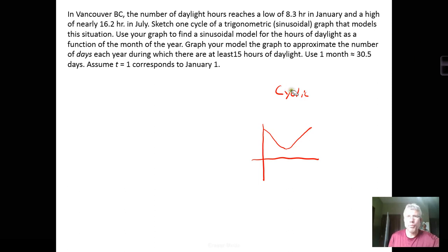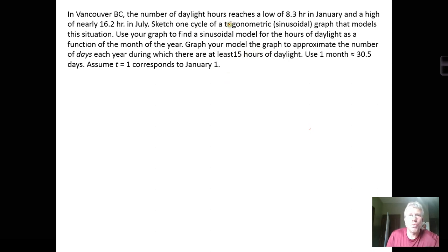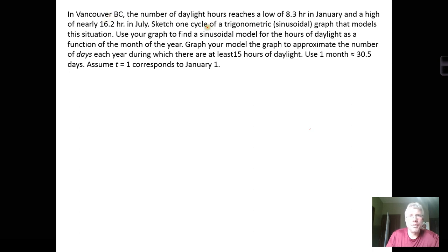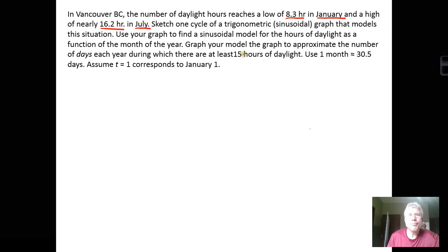What we're going to work on is modeling daylight hours as a function of the time of year. In the northern hemisphere, during the winter we get fewer daylight hours than in summer because of the tilt and rotation of the earth around the sun. In this example, Vancouver, British Columbia has a low of 8.3 hours of daylight in January and a high of 16.2 hours in July.